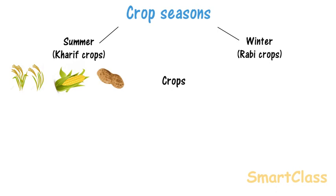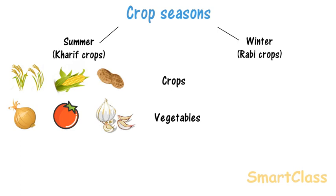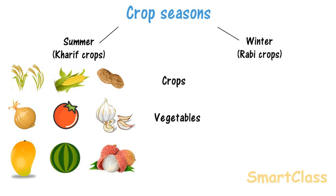Some kharif vegetables are onion, pumpkin, tomato, garlic. Some kharif fruits are mango, melon, lychee, plum.